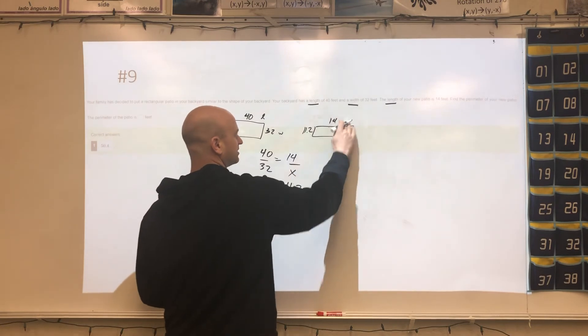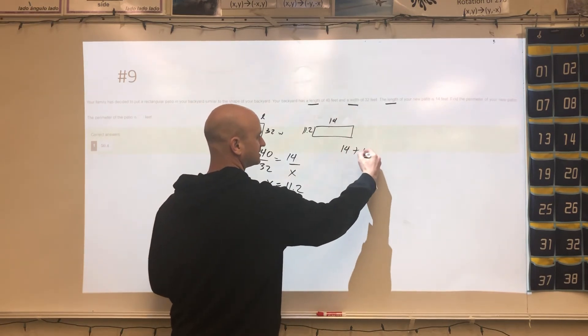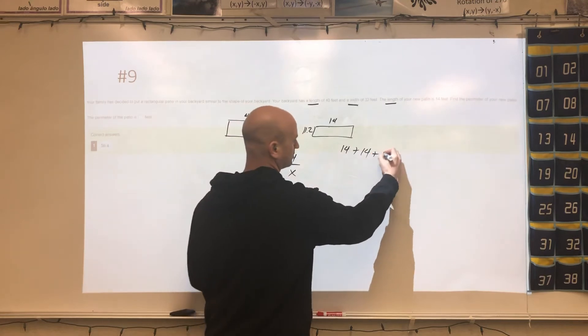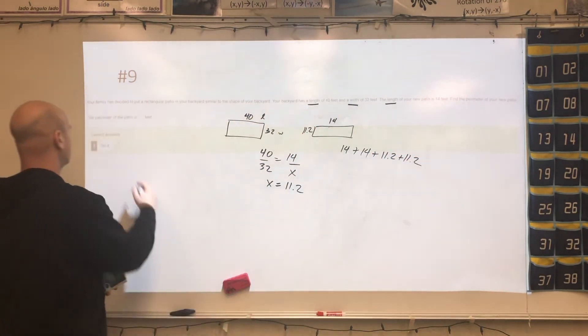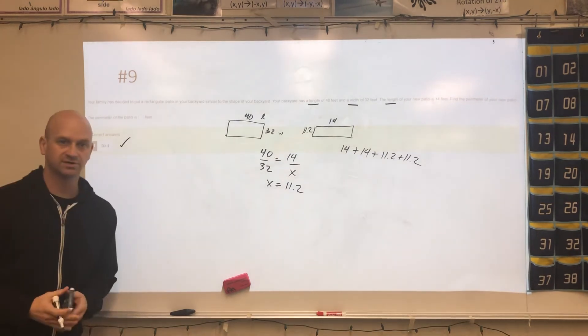So now my answer isn't 11.2, but now I have to find the perimeter of this. So I would do 14 plus 14, which is 28, plus 11.2, plus 11.2. And that would give you your 50.4 as your perimeter.